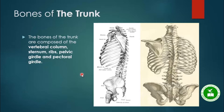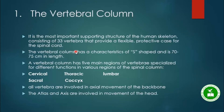The bones of the trunk are composed of the vertebral column, sternum, ribs, pelvic girdle, and pectoral girdle. We are going to discuss these bones one by one. The first one is the vertebral column, which is the most important supporting structure of the human skeleton.